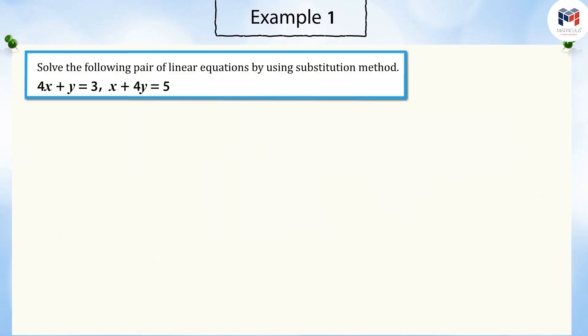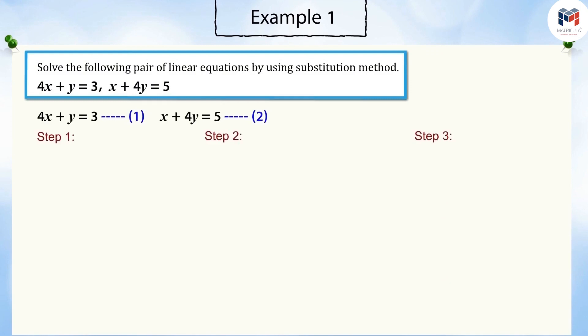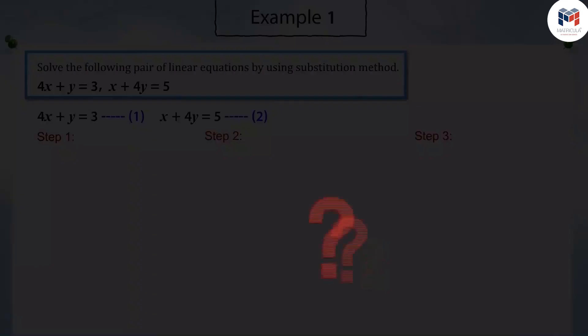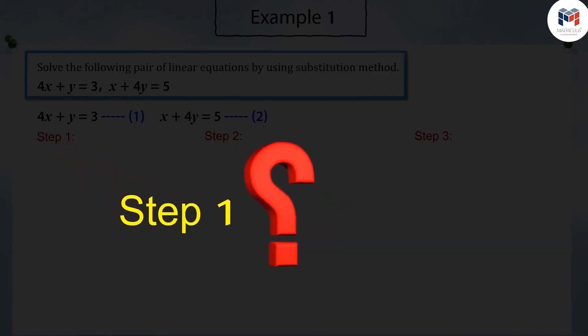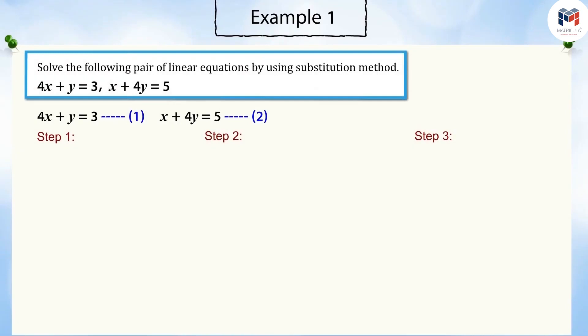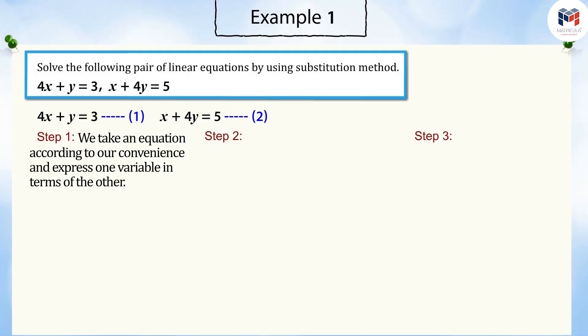Solve the following pair of linear equations by using the substitution method. Do you remember that the substitution method has three steps? Can you tell what is the first step? Yes — we take an equation according to our convenience and express one variable in terms of the other.